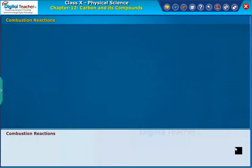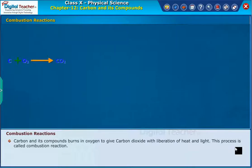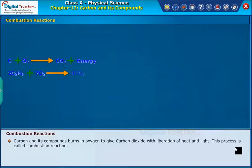Let us learn each of the chemical properties of carbon compounds in detail. We begin with the combustion reaction. Carbon and its compounds burn in oxygen to give carbon dioxide with the liberation of heat and light. This process is called combustion reaction.